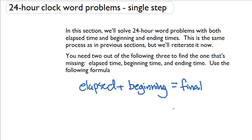So what if they give you the final time and the elapsed time but they want you to find the beginning time? Well, same thing. Let's manipulate this equation. I want to get beginning time by itself. So I want to get rid of this elapsed time. I want to move it all the way to the other side. To move it all the way to the other side, I need to subtract it from both sides.